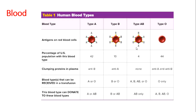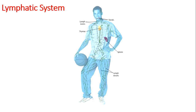Medical professionals use blood type to determine which type of blood a person can receive from a donor. For example, people with type O blood have no proteins on their red blood cells, so they can receive blood only from a donor who also has type O blood.